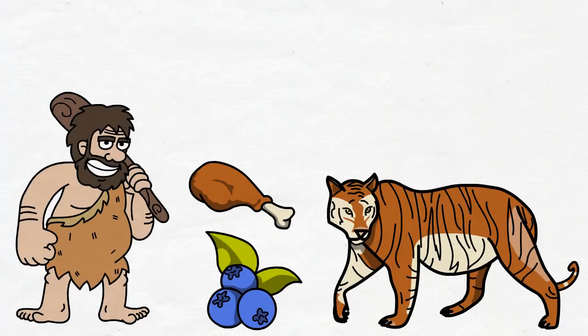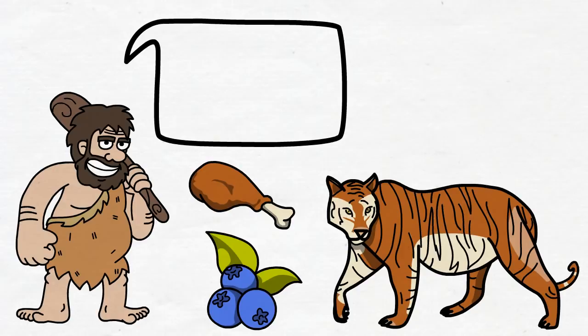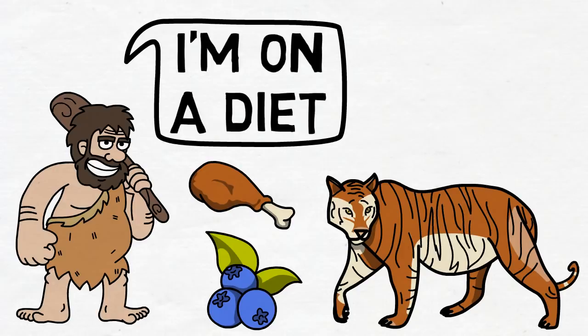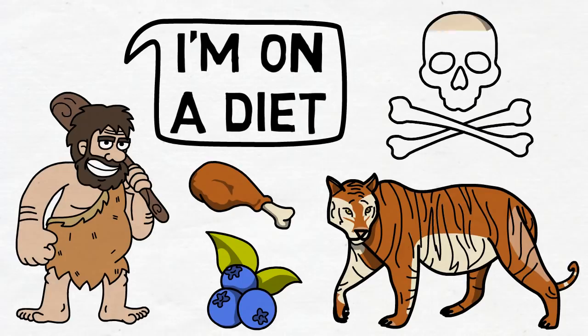What could potentially happen in the future was less of a concern. So when our ancestors found food, they ate it right away. They didn't wait and be like, oh I'm on a diet, I'll eat that tomorrow. No, that wouldn't make any sense in terms of survival, as tomorrow was not guaranteed.